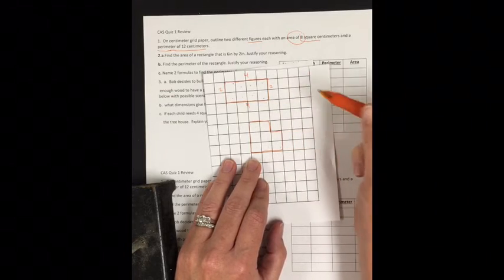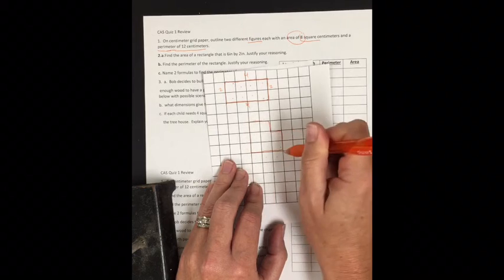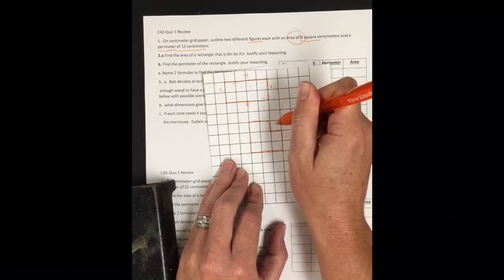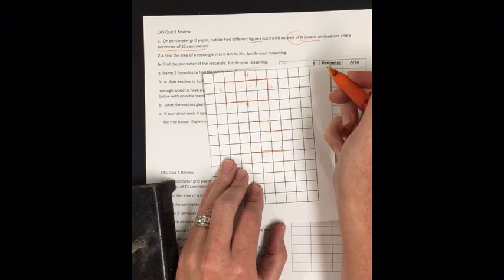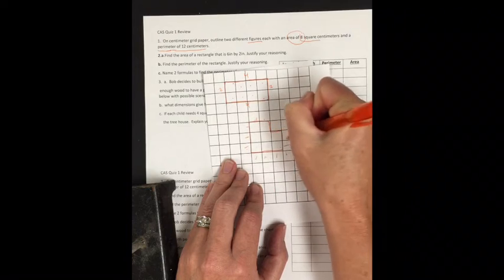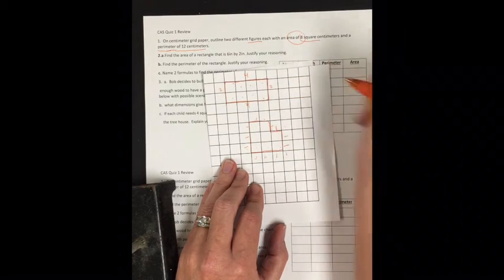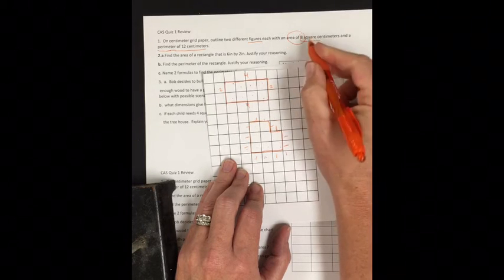Now let's check my perimeter: 1, 2, 3, 4, 5, 6, 7, 8, 9, 10, 11, 12. So I end up with 1, 2, 3, 4, 5, 6, 7, 8, 9, 10, 11, 12. So I have a perimeter of 12. Therefore it is a correct shape for this.